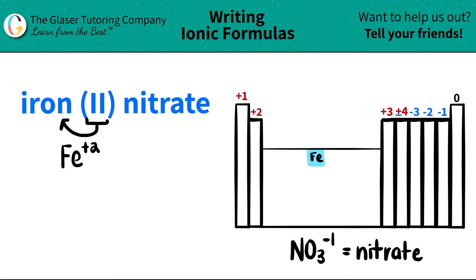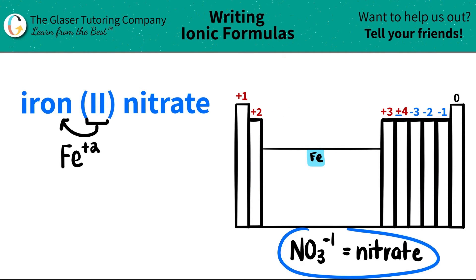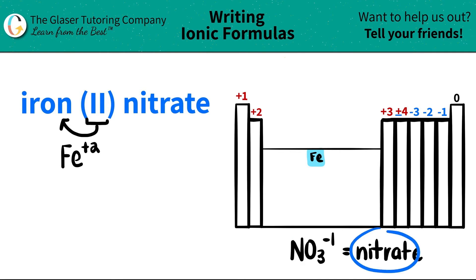Now, here's a trick: if you see your next component ending in A-T-E, that means you have a polyatomic. A-T-E's and I-T-E's are all polyatomic endings. Polyatomics are not on the periodic table — they must be memorized. The one we're going to use today is nitrate, which is always NO₃ minus 1.